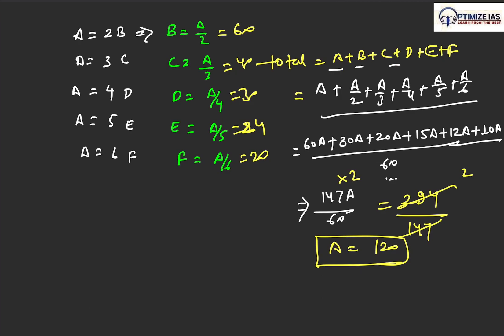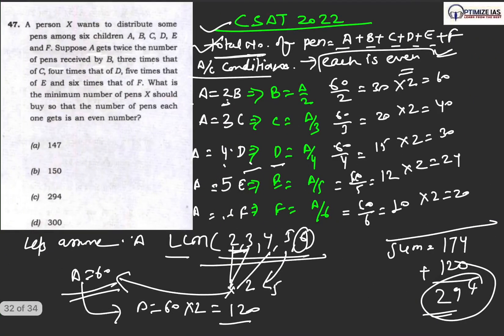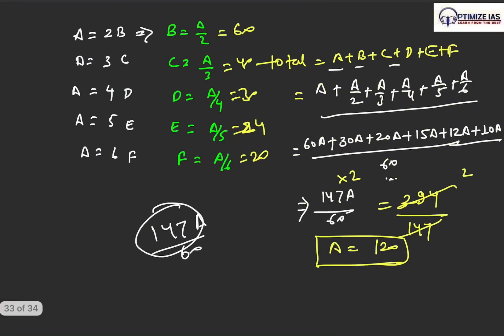LCM of 2, 3, 4, 5, 6 gives us 60, and then we solve, and then we get the value here as 147A by 60. The moment we get 147, if we quickly look at our option, we get that 294 is... half of 294 gives us 147.